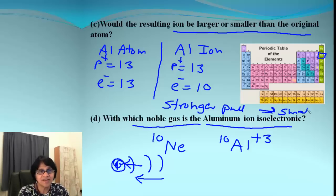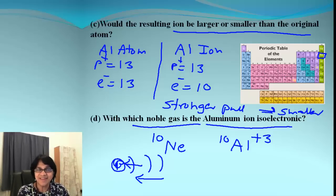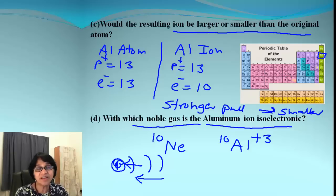That results in a smaller radius for a positive ion like aluminum. I hope you enjoyed the video and it helps explain Bohr's model for giving us the number of valence electrons and the formation of ions. I will see you in the next video, bye!